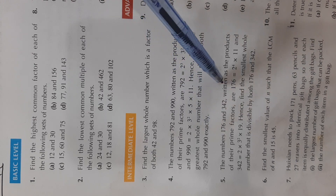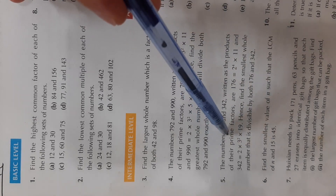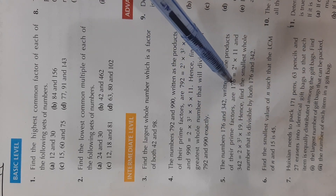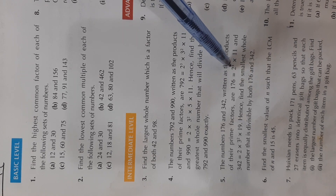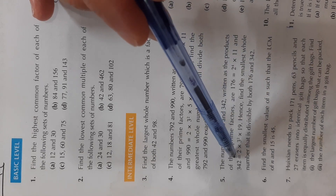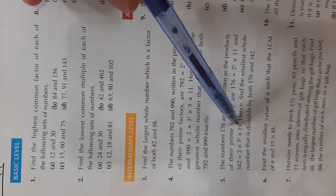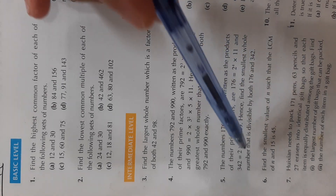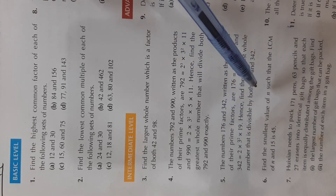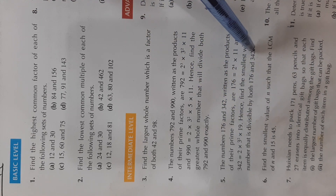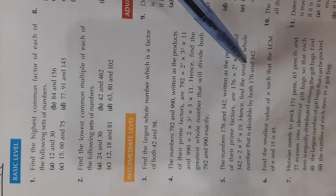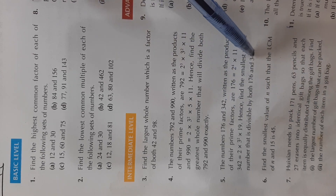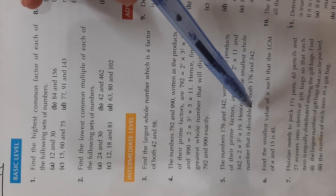Question number 5: the numbers 176 and 342 written as products of their prime factors are 176 = 2⁴ × 11 and 342 = 2 × 3² × 19. Hence find the smallest whole number that is divisible by both 176 and 342. In this question we have to find the LCM.